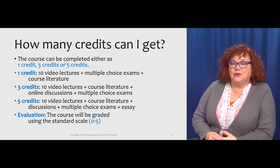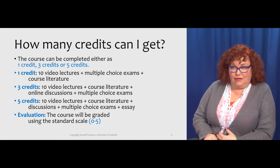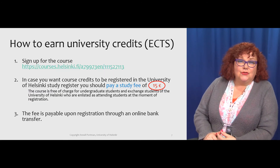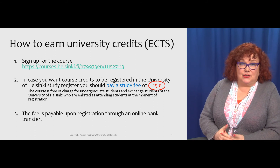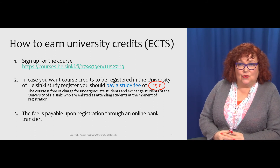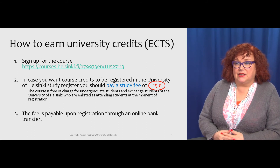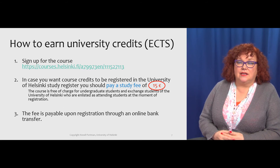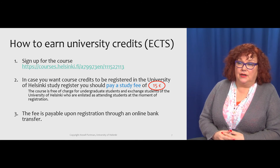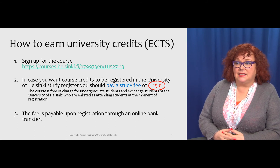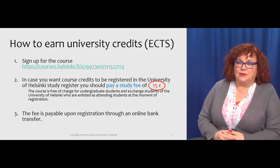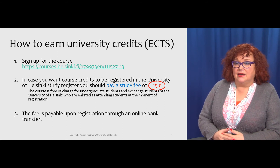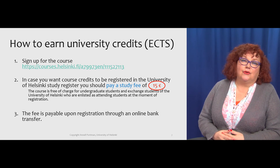The evaluation of the course uses the standard scale of zero to five. To earn university credits, you need to sign up for the course — you can see the web address here. In case you want the course credits to be registered for the University of Helsinki, you should also pay a modest student fee of 15 euros. This course is free for undergraduate students and exchange students of the University of Helsinki who are enlisted as attending students at the moment of registration. This fee is otherwise payable upon registration through an online bank transfer.